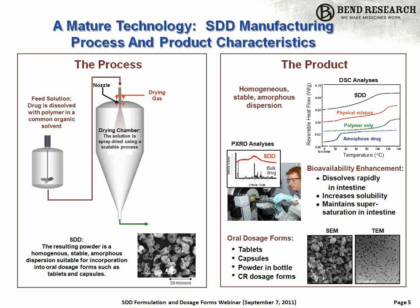When done properly, what you get is a homogeneous and stable amorphous dispersion, which has characteristics shown on the right. By thermal analysis — differential scanning calorimetry — you see a single glass transition temperature, which is evidence of no phase separation, a uniform molecular dispersion, no evidence of crystallinity by other analyses such as powder X-ray, microscopy, etc. The morphology is typically, as shown in these scanning electron microscopy images, a collapsed sphere or raisin-like morphology with fairly high surface area.